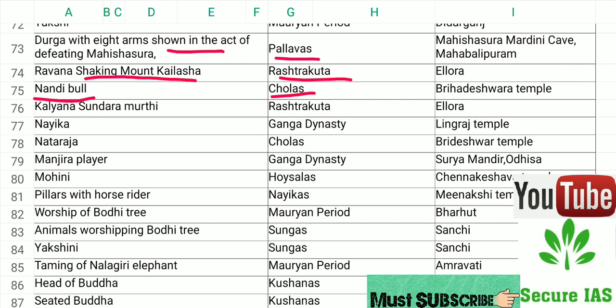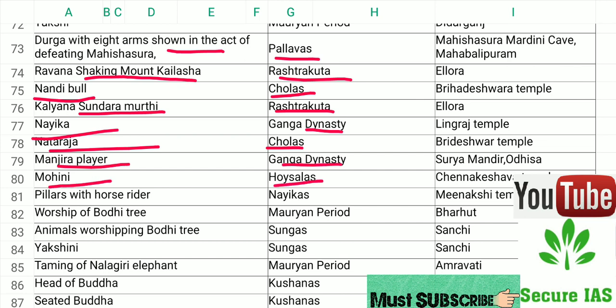Kalyana Sundara Murti belongs to the Rashtrakuta period. Naika is from the Ganga dynasty. Nataraja is from the Chola period. Manjeera Pillar is from the Ganga dynasty. Mohini is associated with the Hoysala dynasty.